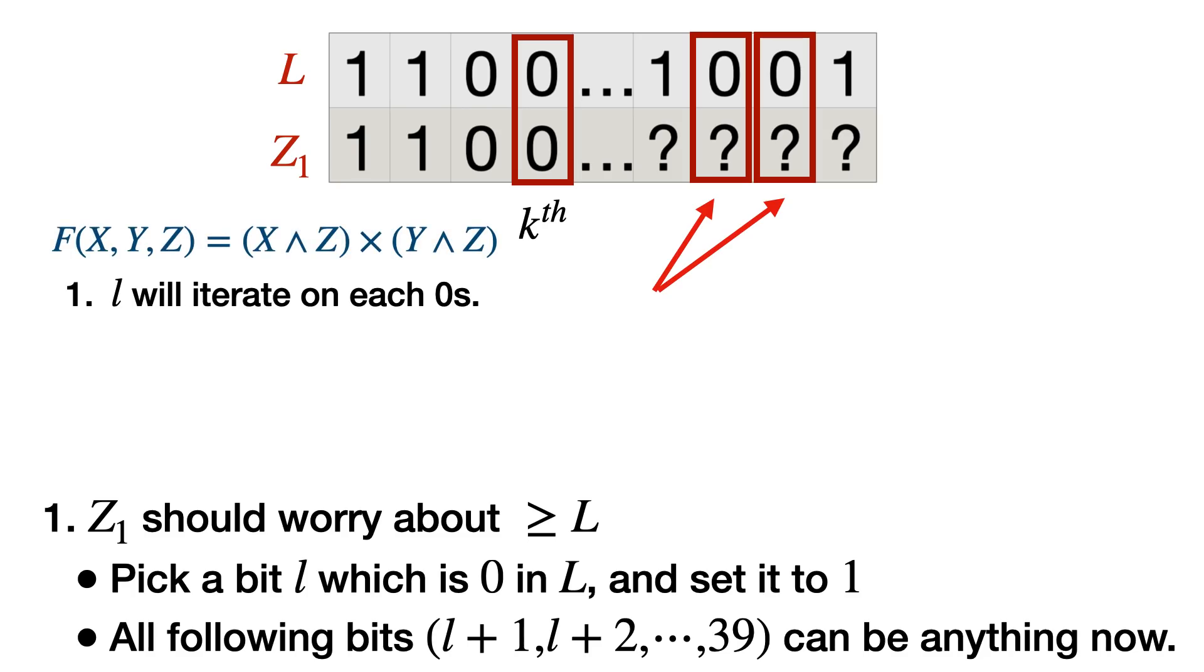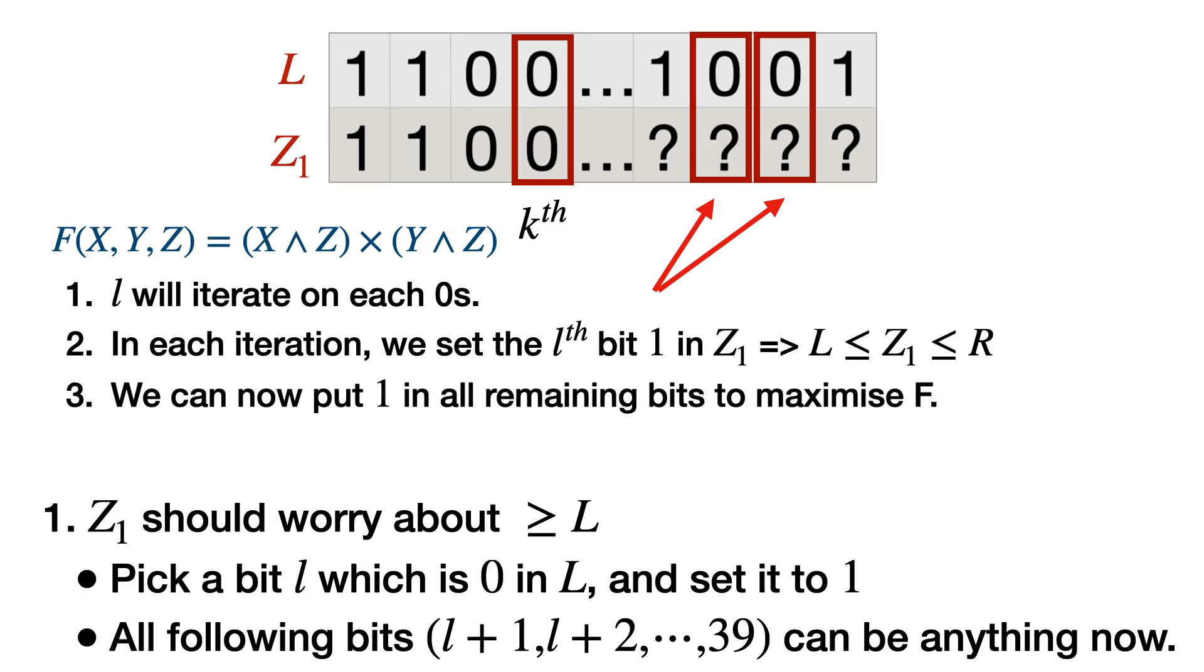We have to keep in mind, we have to maximize F(X,Y,Z), but at the same time the numbers in Z should be in the range L to R. In each iteration, we will set this Lth bit to one in Z1, which will ensure that particular constraint. Now I can focus on maximizing our function F(X,Y,Z). To do that, I will put one in all the remaining bits after L. Z is basically performing AND with both X and Y. If it's having all bits as one, it will contribute really a lot in ensuring X and Y are maximized.